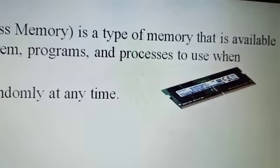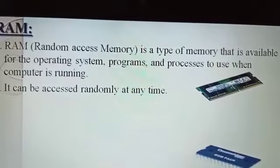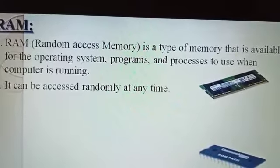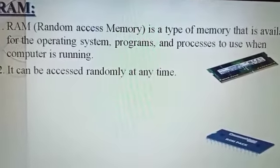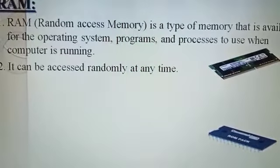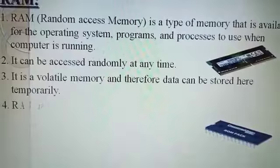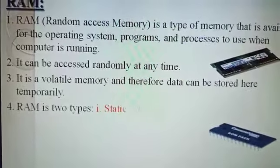RAM - Random Access Memory - is a type of memory that is available for the operating system, programs, and processes to use when the computer is running. It can be accessed randomly at any time. It is a volatile memory, and therefore data can be stored here temporarily.